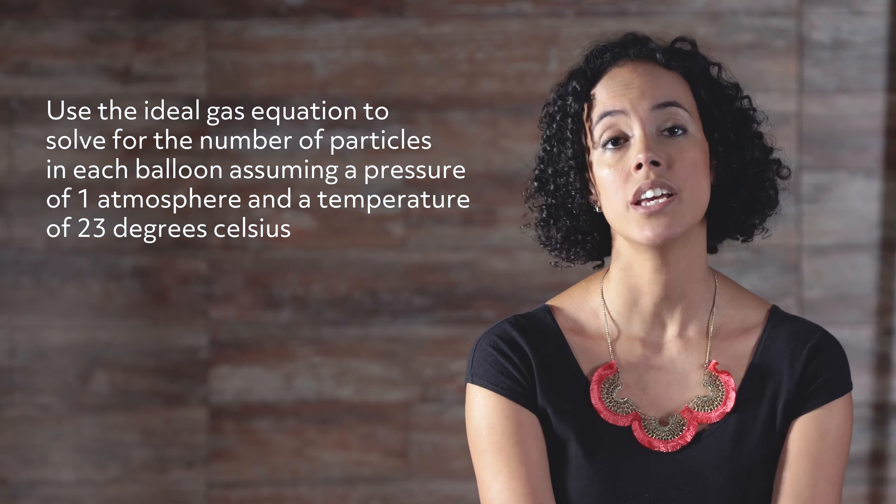Circling back to Avogadro, his observation that any gas at constant temperature and pressure would occupy the same volume helped scientists understand the nature of gaseous particles and what assumptions we could make about their behavior and interactions. This helped develop the kinetic theory of gases, as well as the ideal gas law. If we rearrange the gas law to solve for volume, we find Avogadro's law: volume equals moles times the gas constant times temperature divided by pressure. Under constant temperature and pressure, volume equals moles of a gas times the constant k, where k equals R times T divided by P. In other words, the volume of a gas is directly proportional to the number of particles present — the primary conclusion of Avogadro's Principle. Thanks for watching, and happy studying!